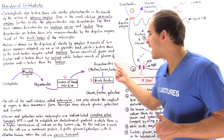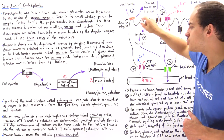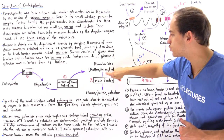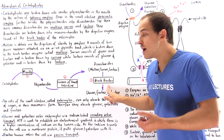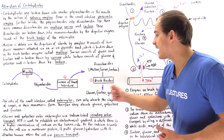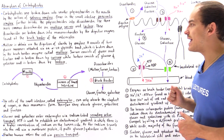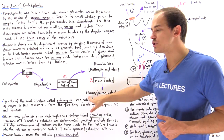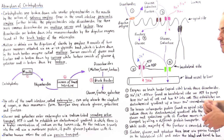Maltose is broken down at the brush border into two glucose molecules. Sucrose is broken down at the brush border by sucrase into fructose and glucose, while lactose is broken down by lactase into galactose and glucose, also at the brush border.